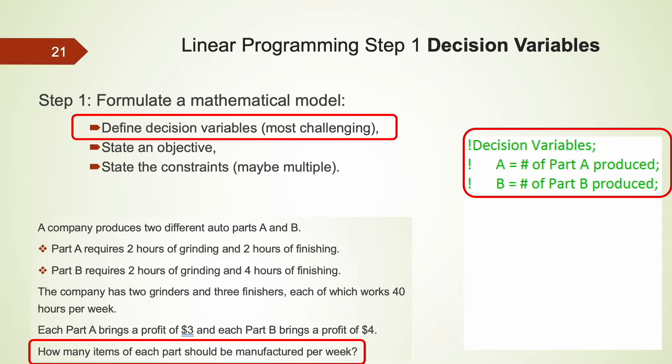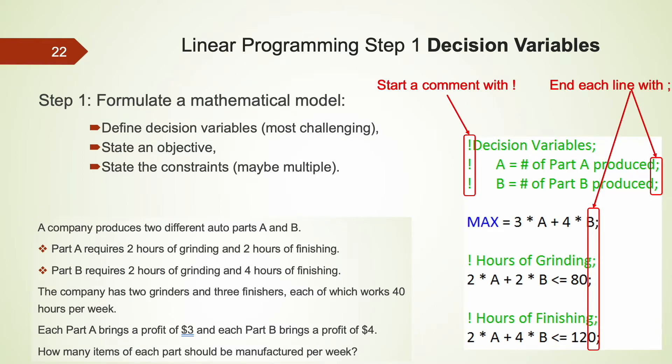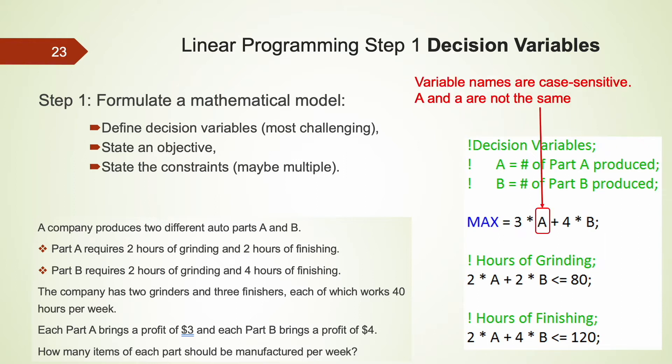For this problem, the decision variables are somewhat easy to be identified. In general, defining decision variables is usually the most challenging part of the problem formulation. The decision variables are usually placed at the very top of your model. When you define the decision variables, you probably want to provide a little bit more explanations for these variables to prevent future confusion. This explanation or comments are very important when working with other people on the same problem. These comments will be completely ignored by lingo. To comment out certain lines in lingo, we place an exclamation mark at the beginning of each line. Another lingo syntax is to end every line with a semicolon. This is probably one of the most frequent sources of error when writing programs in lingo. Another lingo syntax is that the variable names are case sensitive. So capitalized A and small letter A are treated as two variables by lingo.